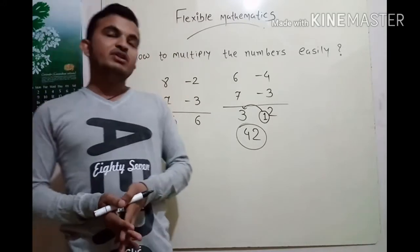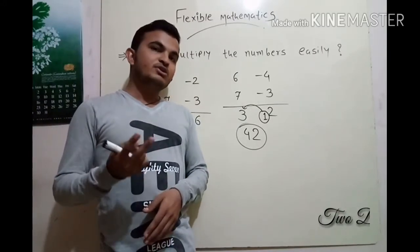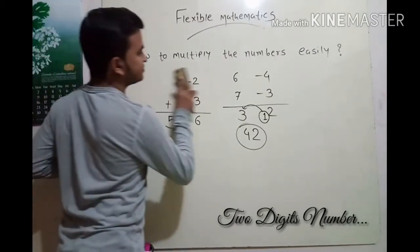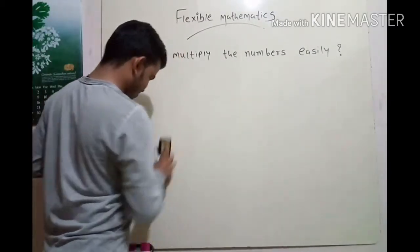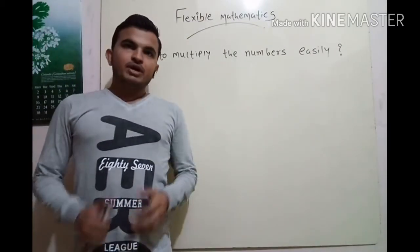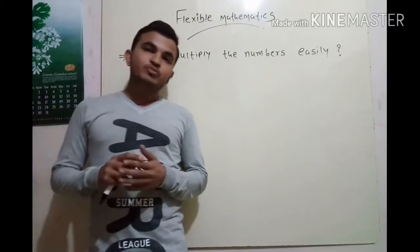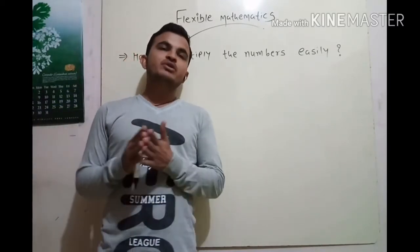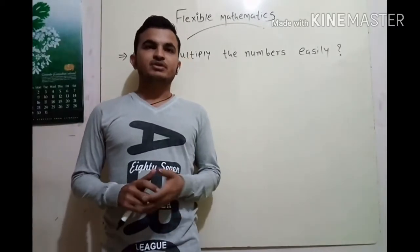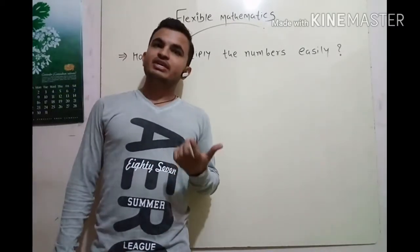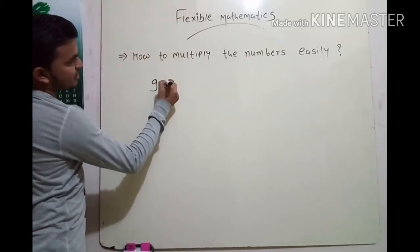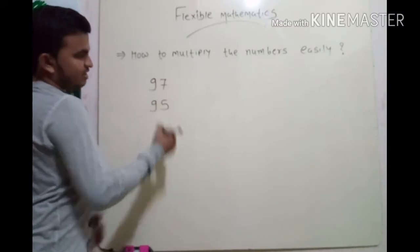Now we will learn how to multiply two-digit numbers. For two-digit numbers, they should be near to 100, and it will be much easier. Let's start with one easy example.